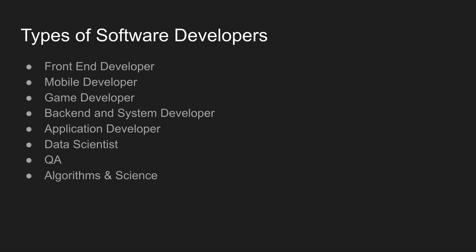Next are algorithms and science software developers. In the real world, you will use algorithms and scientific information. For example, in Google Maps, you use algorithms to find the shortest distance between two locations.